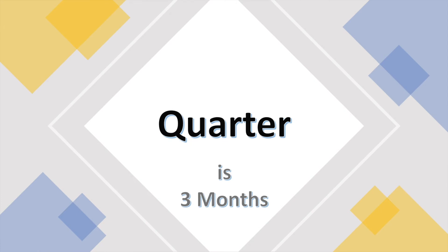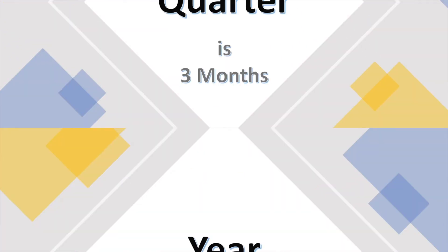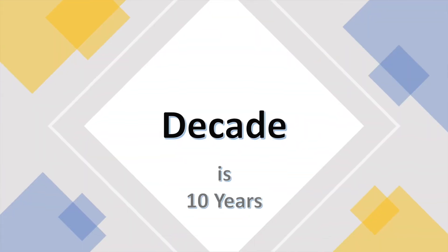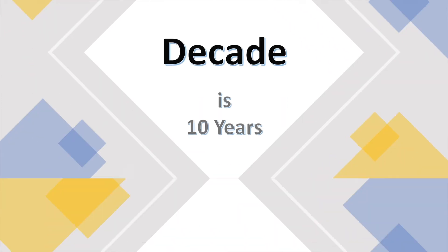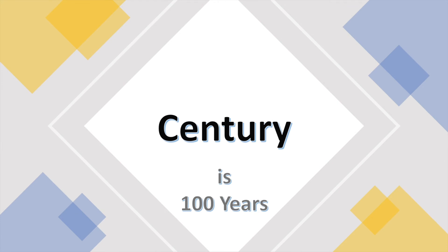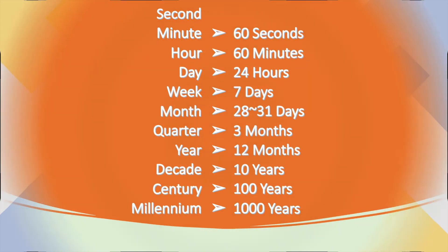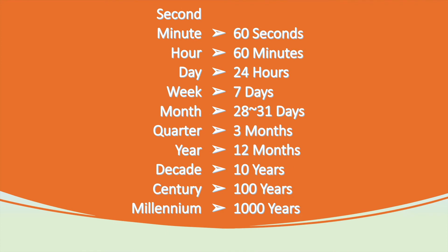A quarter is 3 months. A year is 12 months. A decade is 10 years. A century is 100 years. A millennium is 1000 years.